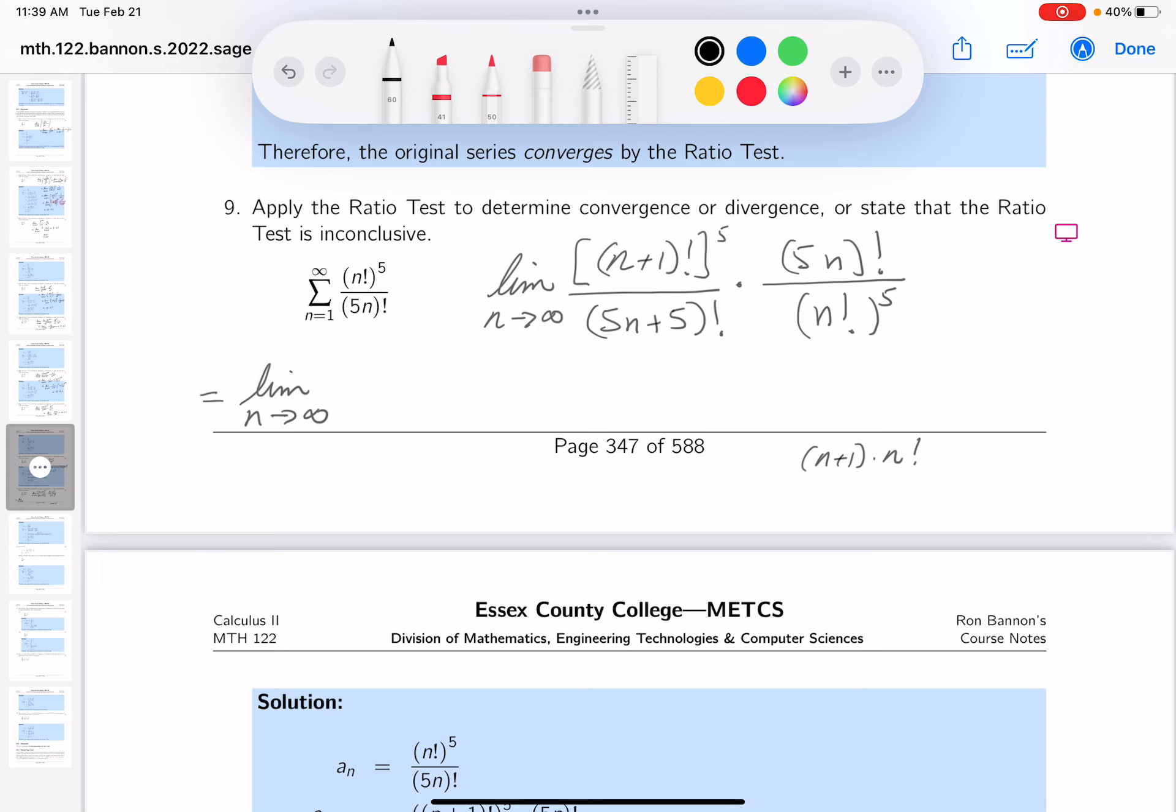And there'd be 5 of those. And on the bottom, you've got 5 of those n!. So what do you have left? You're left with (n+1) to the fifth power.